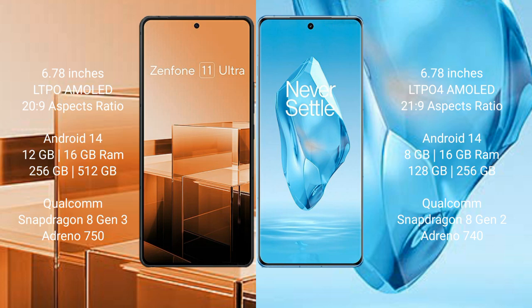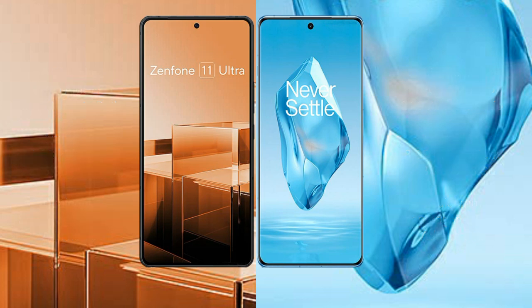Asus Zenfone 11 Ultra comes with 12GB or 16GB RAM and 256GB internal storage, powered by the Qualcomm Snapdragon 8 Gen 3 processor with Adreno 750 GPU. OnePlus 12R comes with 8GB, 12GB, or 16GB RAM and 128GB or 256GB internal storage, also with the Snapdragon 8 Gen 3 and Adreno 750 GPU.